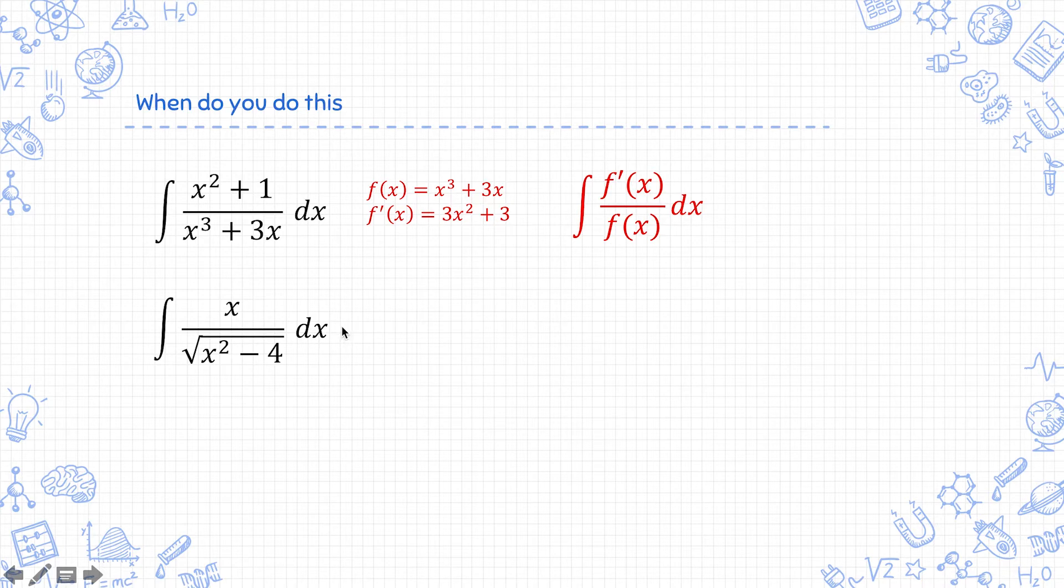For the second one, if you take fx equals x squared minus 4, that makes f'x equals 2x. So this expression is in the form f'x times fx to the power of n, where n equals negative half. Take note that the n can be negative.